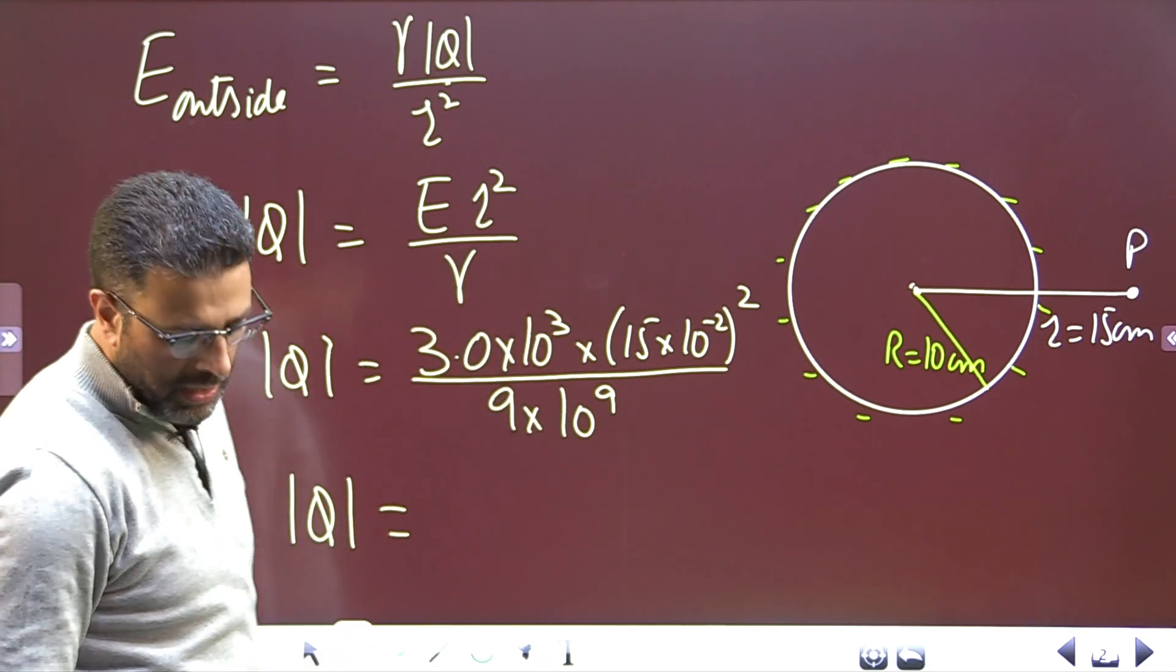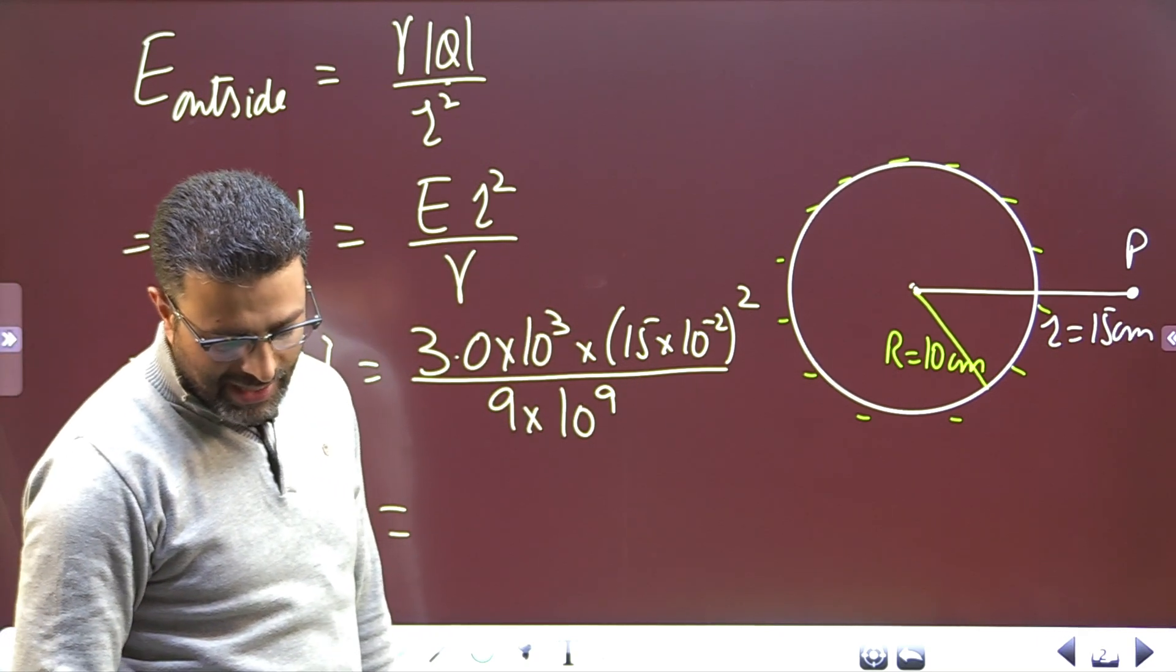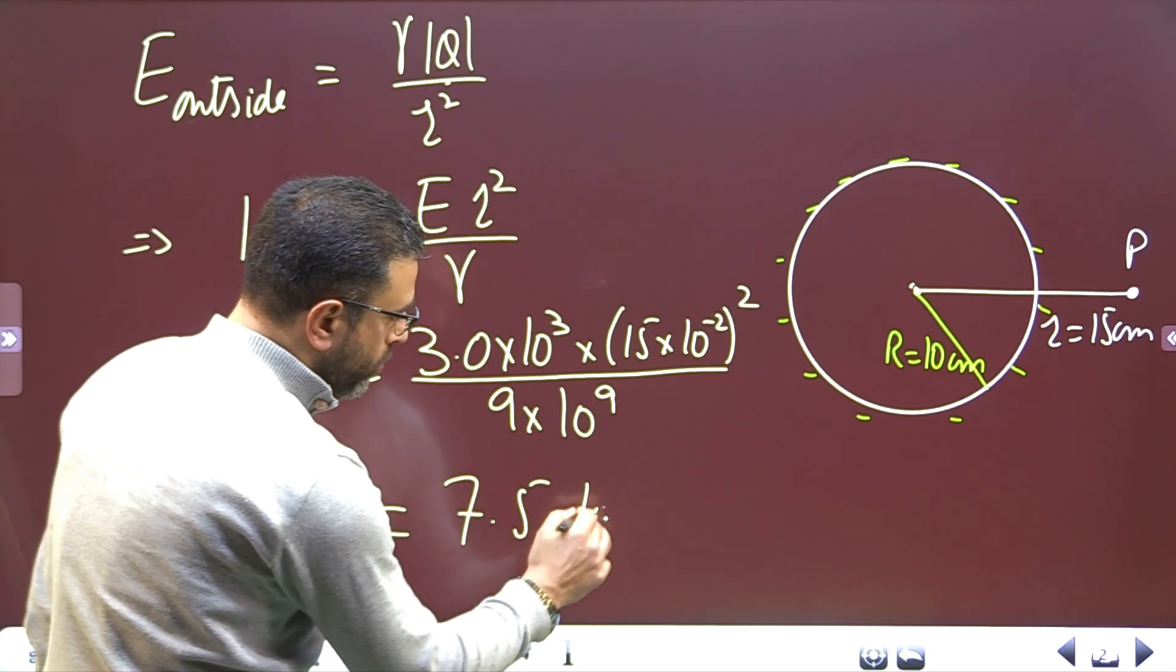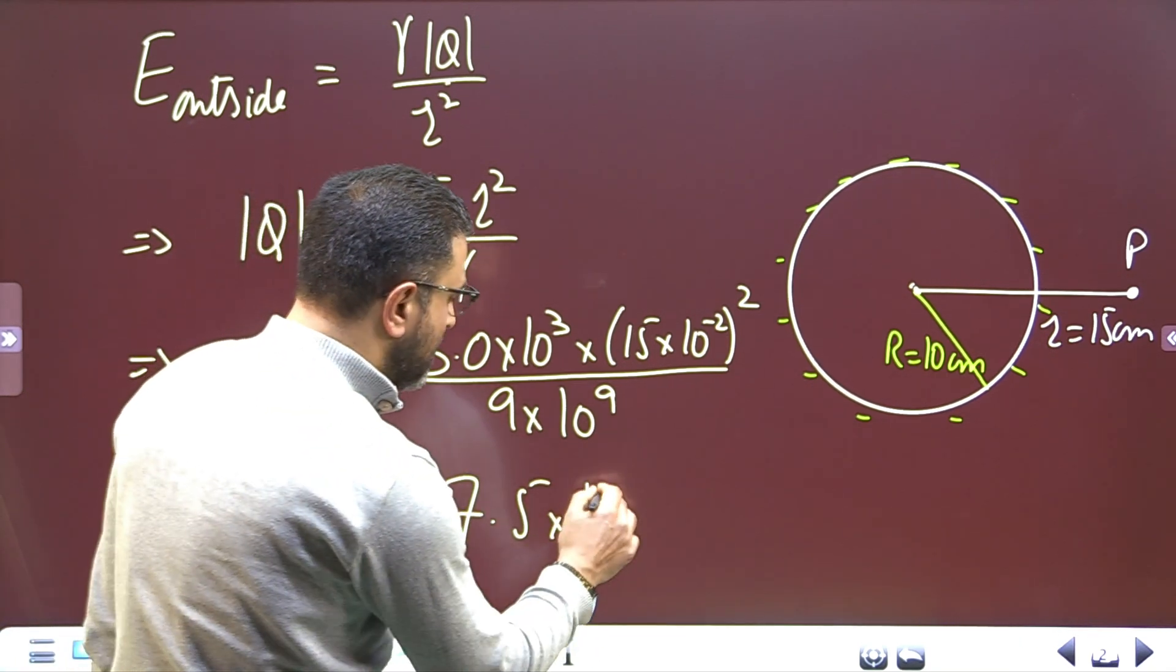So |Q| equals... I have already done that. It comes out to be 7.5×10⁻⁹ Coulomb. This is the magnitude of the charge on the surface of this sphere.